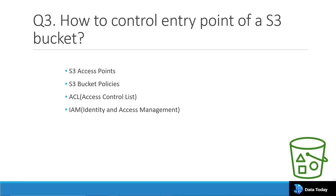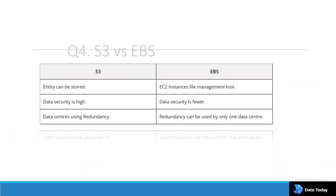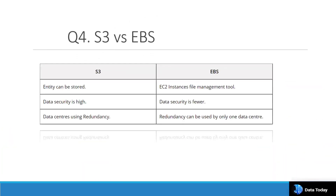S3 Access Points provide a predefined entry point to a particular application, giving proper access control to S3 data. These are all the options available for controlling entry points to an S3 bucket.